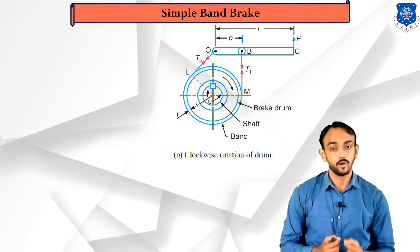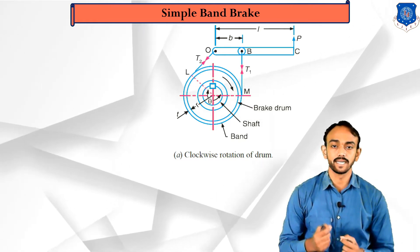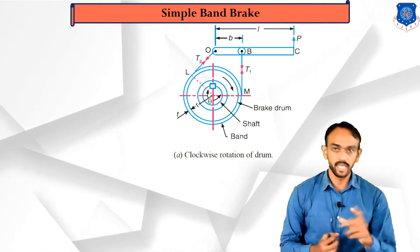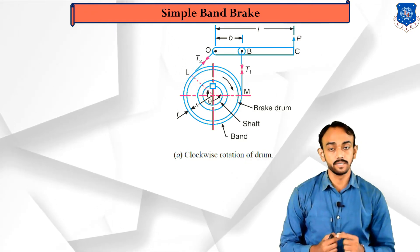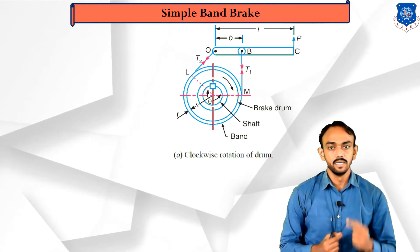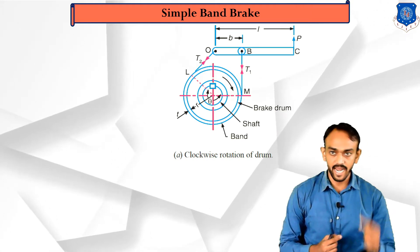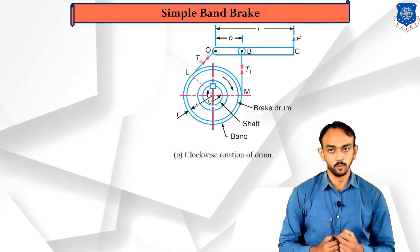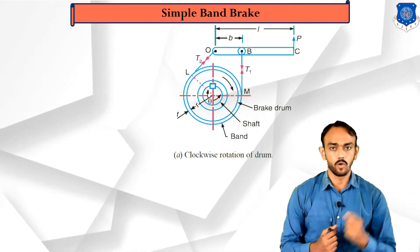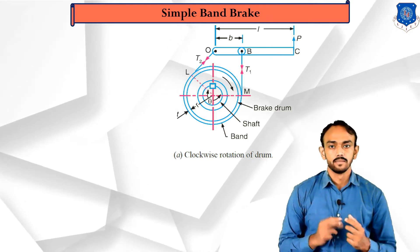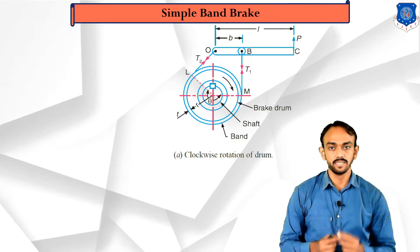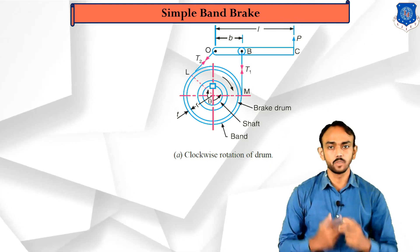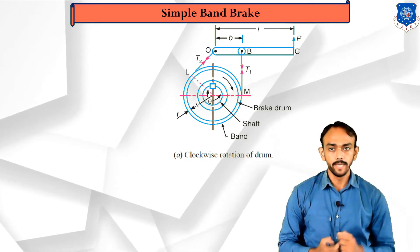There are two sides of the band: one is the tight side and the other is the slack side. Which side is which depends on the direction of rotation of the drum. If the drum rotates clockwise (as shown in the figure), the band connected to point B is the tight side T1, and the end connected to the pivot point O is the slack side T2. If the drum rotates anti-clockwise, the tight side and slack side interchange.